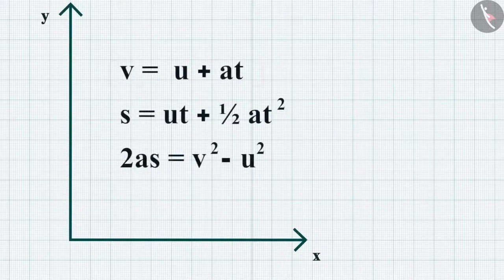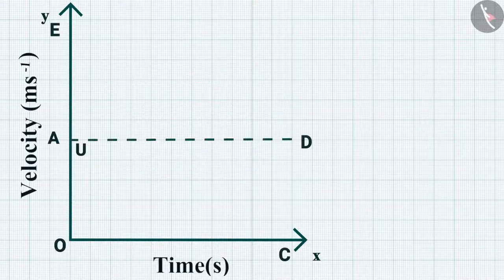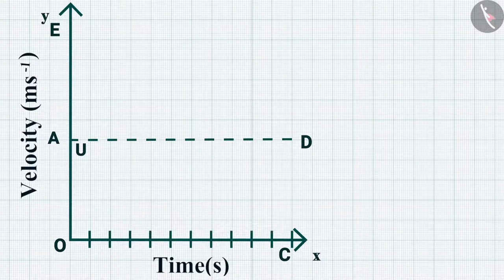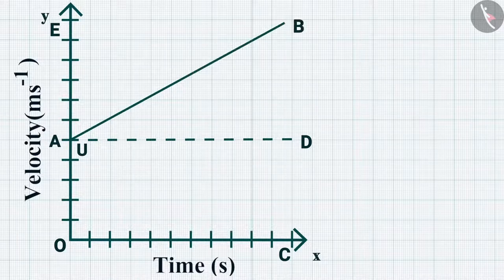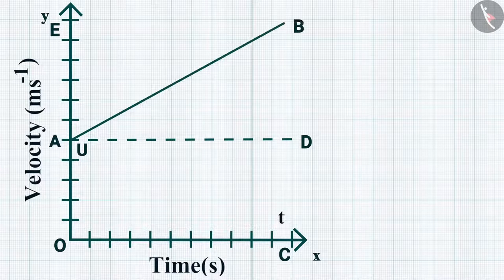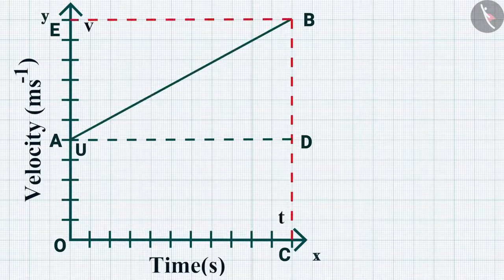For the first equation — the velocity-time relation — consider a velocity-time graph with time along x-axis and velocity along y-axis. The object starts at point A with initial velocity U and moves with uniform acceleration. The final velocity is V at point B at time T. Draw perpendicular lines DC and BE from point B to the x-axis and y-axis respectively.